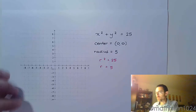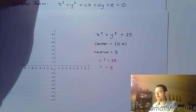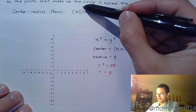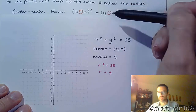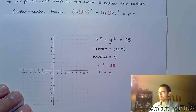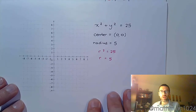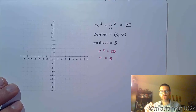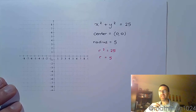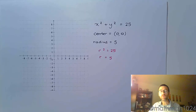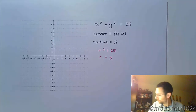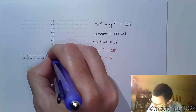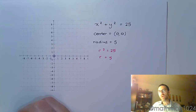The reason the center is (0, 0) is because when you look back at the center-radius form, it's just x squared — there's no minus h and no minus k. When you plot your center, don't fill in a solid circle because it's not actually a point on the circle; it's more of a reference point. So here is (0, 0).